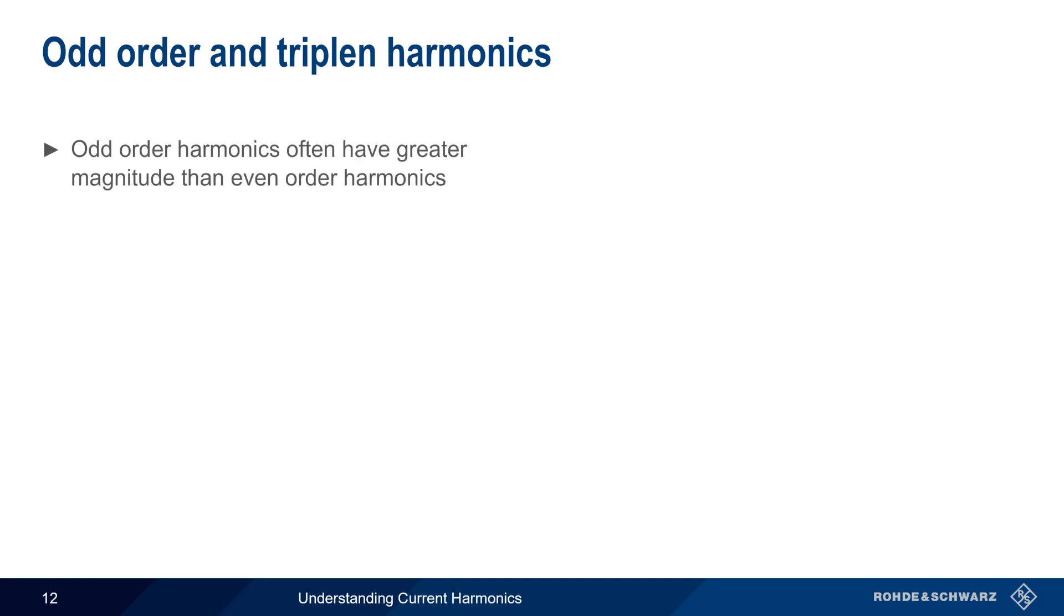It's actually not unusual for odd-order harmonics to have higher amplitudes than adjacent even-order harmonics. Part of the reason for this is the nature of many non-linear loads. For example, switch mode power supplies draw current in pulses or bursts, and as we saw earlier, these types of waveforms have significant odd-order harmonic content.